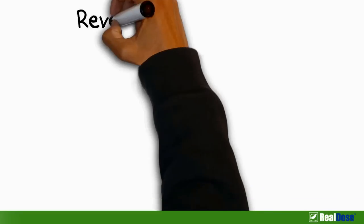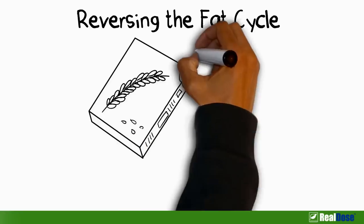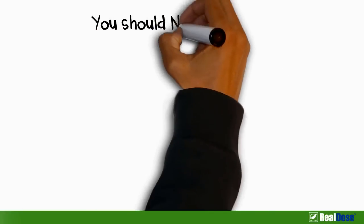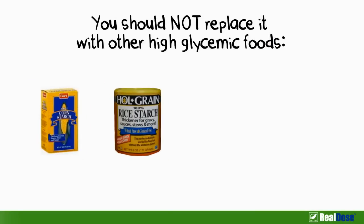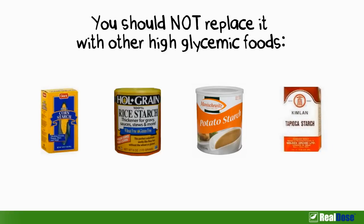So what does one do in order to reverse this effect? You might have guessed it. Give up wheat. However, Dr. Davis is clear that you should not replace it with other glycemic foods like corn starch, rice starch, potato starch, and tapioca starch.